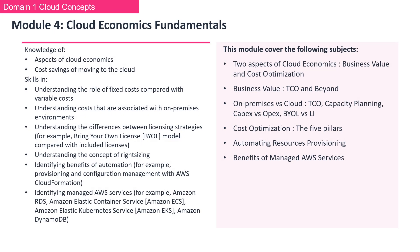Welcome to Module 4, Cloud Economics Fundamentals. In this module, we'll explore the business value of cloud economics, covering TCO and beyond. Dive into the dynamics of fixed versus variable costs, on-premises planning, and licensing strategies. Next, unlock the essence of cost optimization through its five pillars, guiding you to efficient resource use and spending. Discover the pivotal role of automation and the advantages of managed AWS services in enhancing scalability and efficiency. Let's dive in.